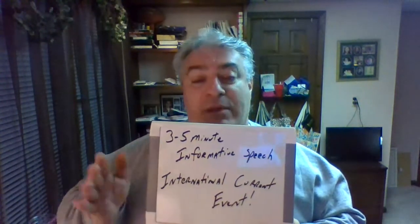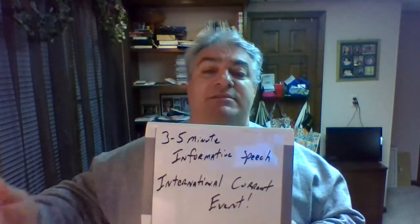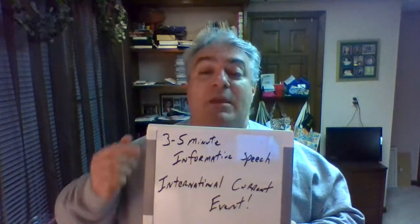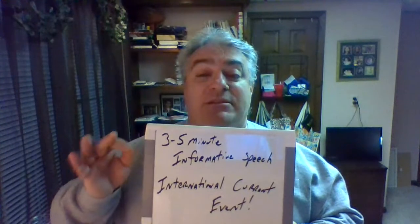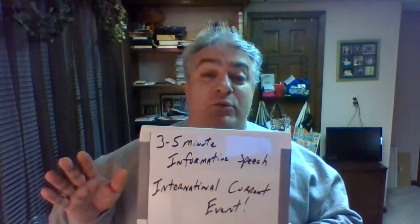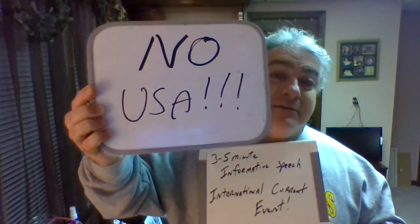International current event. What that means is we want to talk about something that's happened this year or happens on an annual basis, internationally. Your speech topic can have absolutely positively nothing whatsoever to do with the good old USA. No USA. The United Nations recognizes approximately 192 sovereign nations. Take away one, that leaves 191. There's a lot of stuff going on out there, and I want you to go ahead and do a speech about it.